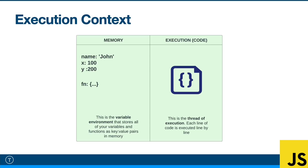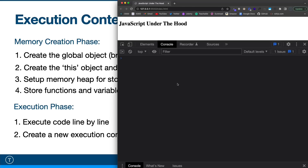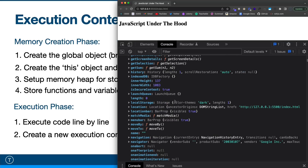Whenever an execution context is created, there are two phases. The first is called the creation phase, or memory creation phase. The second is the execution phase. Think of it as passing over your code twice — first to create memory, second to actually execute. The first thing the creation phase does is create the global object. In the browser this is called window; in Node.js it's called global. That's why if you type 'window' in the console, it gives you the global object with properties like innerWidth and the entire document object.